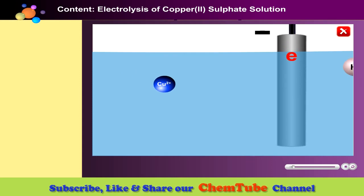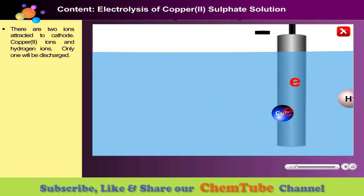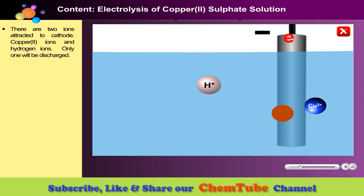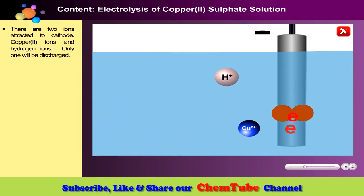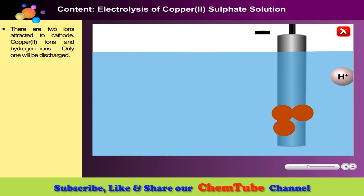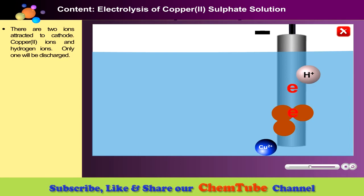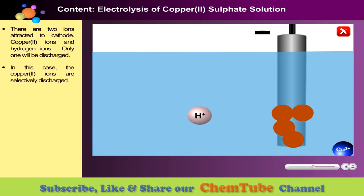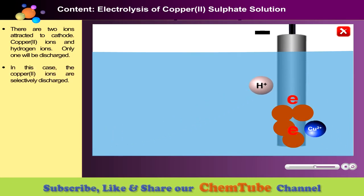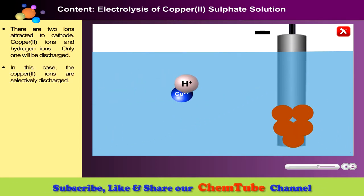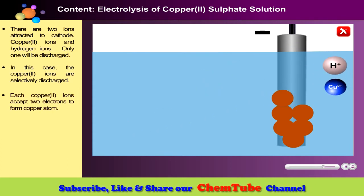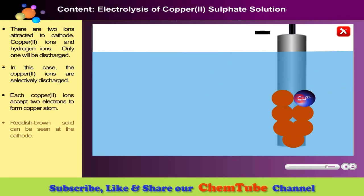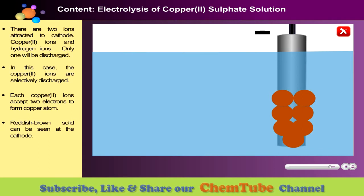Now let's take a look at the cathode. There are two ions attracted to the cathode: copper-2 ions and hydrogen ions. Only one will be discharged. In this case, the copper-2 ions are selectively discharged. Each copper-2 ion accepts two electrons to form copper atoms. Reddish-brown solid is formed at the cathode.